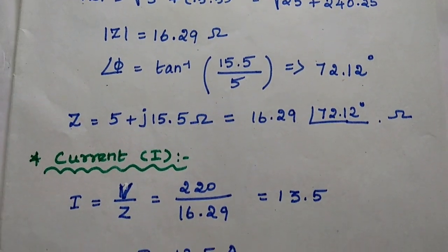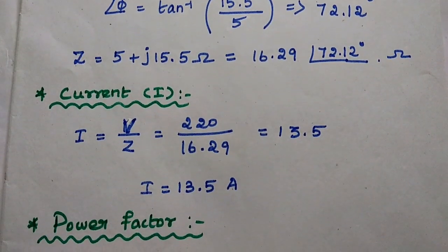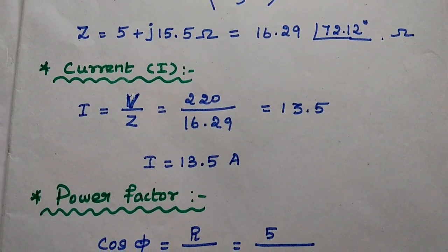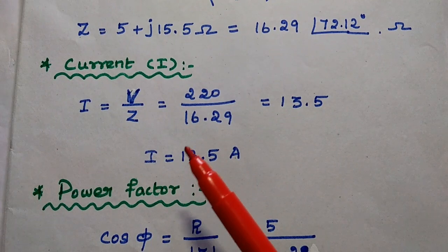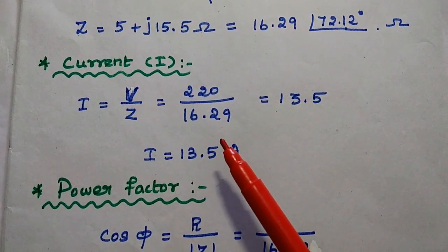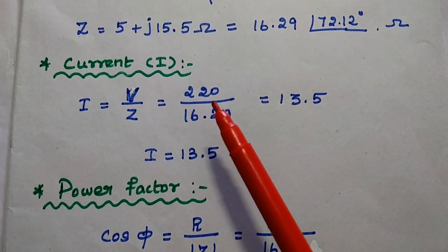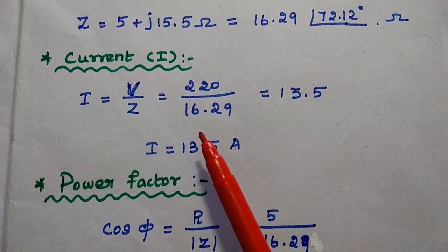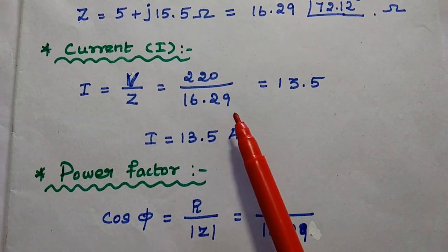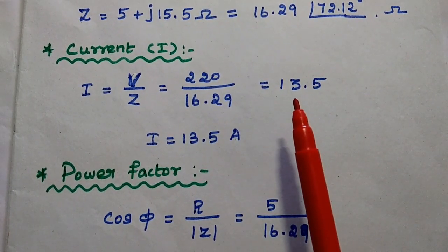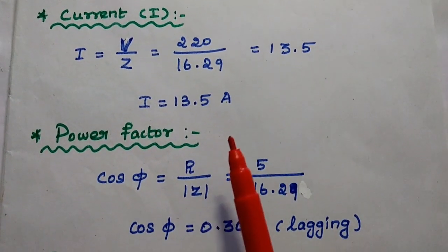Next we are going to find out the current. Current I is equal to V by Z, that is the ratio of voltage to the impedance. Here this impedance represents the magnitude value. Substituting the voltage value as 220 and the magnitude of impedance as 16.29, we can get the answer as 13.5 ampere.